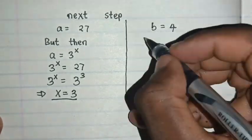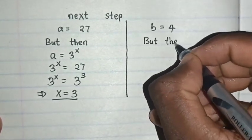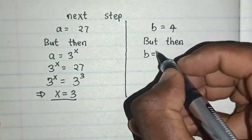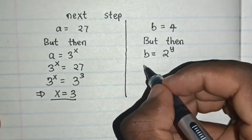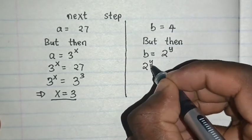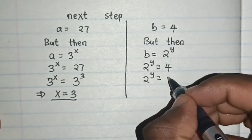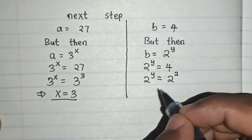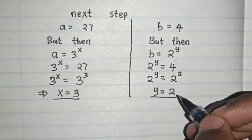And on the side of b = 4, but then b = 2^y. So from 2^y = 4, 2^y = 2². So we compare the powers. So y = 2.